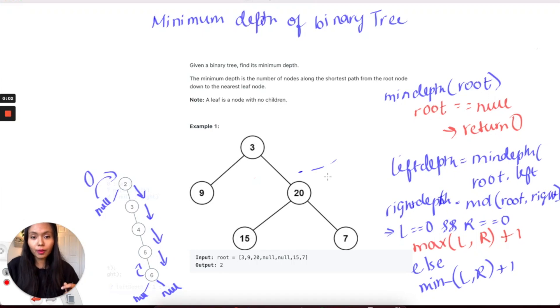Hey guys, today we're looking at the problem minimum depth of a binary tree. What I've done here is outlined the question. We're given a binary tree and we need to find the minimum depth of the number of nodes along the shortest path.